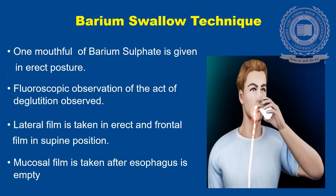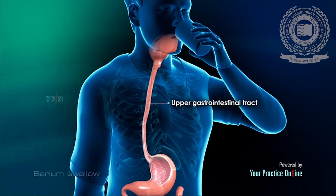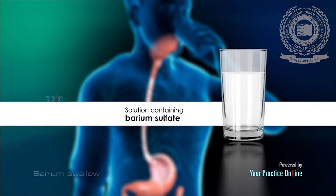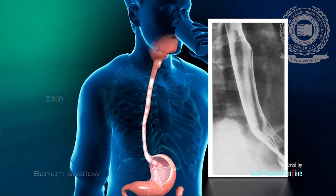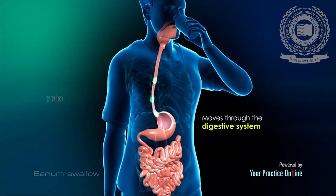Regarding the barium swallow technique: one mouthful of barium sulphate is given in the erect position and the act of deglutition is observed under fluoroscopy. The lateral film is taken in the erect position and the frontal film is taken in the supine position. After the esophagus is empty, the mucosal film is taken. Barium coats the walls of the pharynx and the esophagus and appears white on the images, and it can be tracked as it moves through the digestive system by performing a series of x-rays.